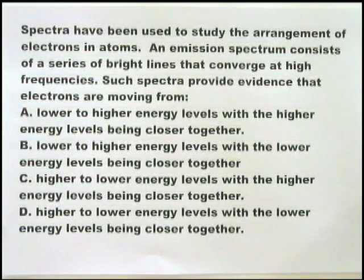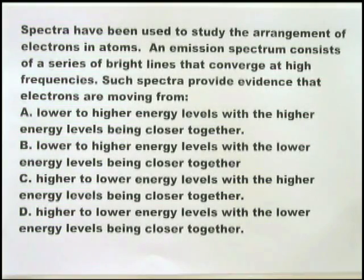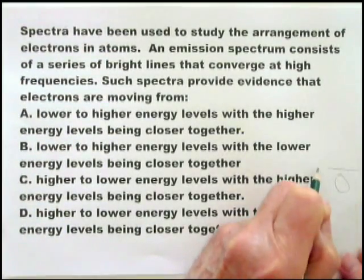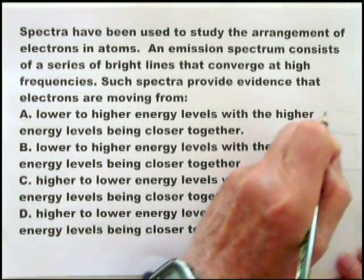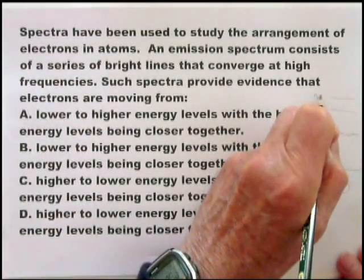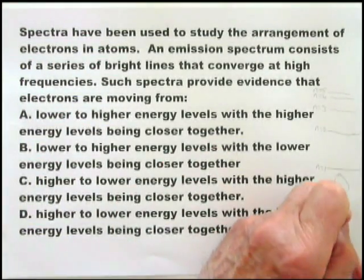This question is about the atomic emission spectrum, specifically the spectrum of the hydrogen atom, but generalized to all atoms. What you have to remember is that the energy levels converge as you go away from the nucleus. So if the nucleus is here at N=1, N=2 is up here, then N=3, N=4, N=5 — you get that converging of the levels as you go away from the nucleus.